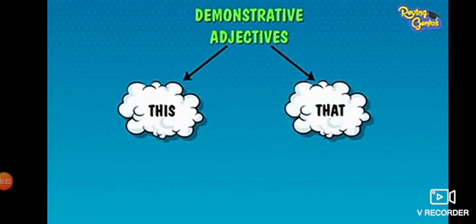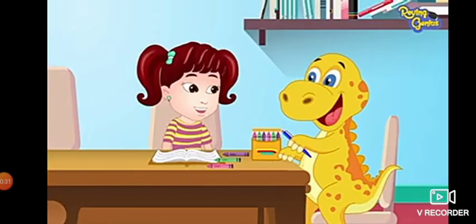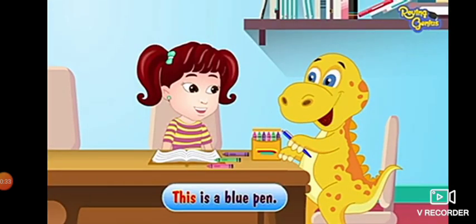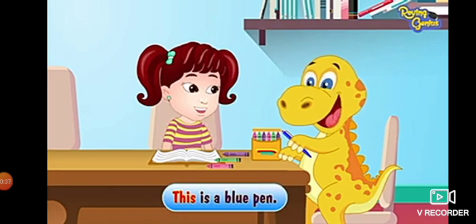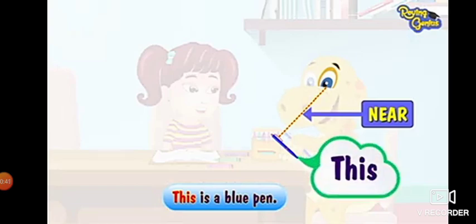Demonstrative adjectives. This and that are demonstrative adjectives. They are often used to point out nouns. For example, this is a blue pen. As this pen is near to me, I use this.